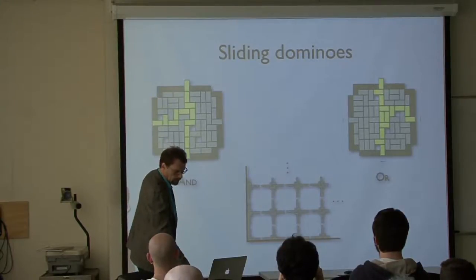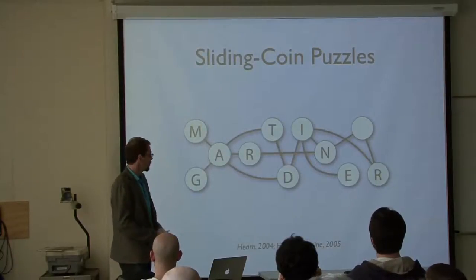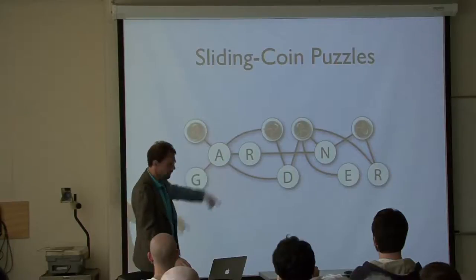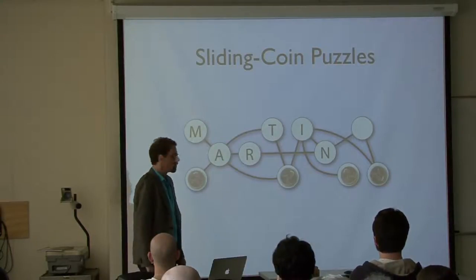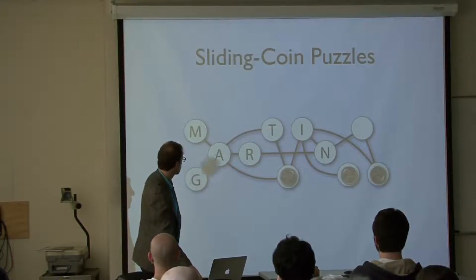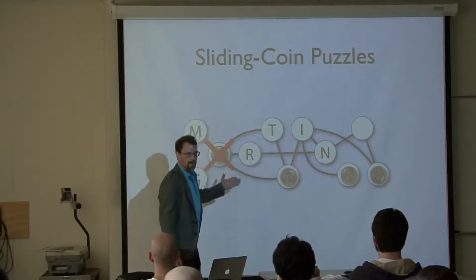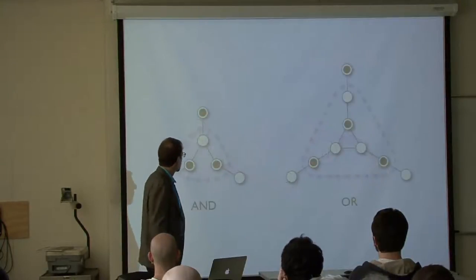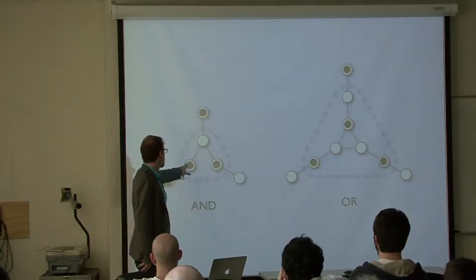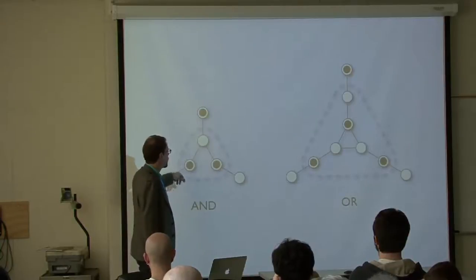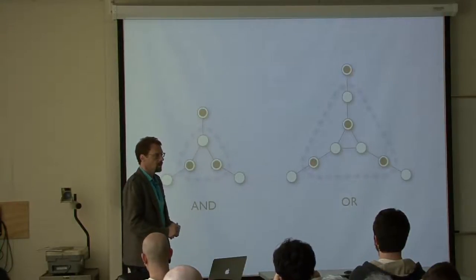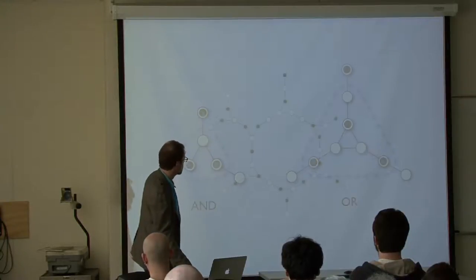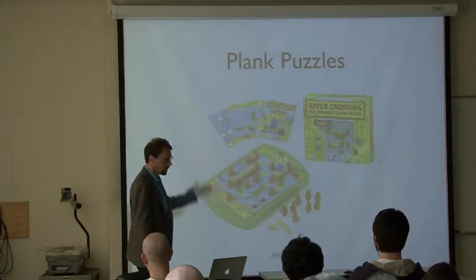The generalized version of the coin-sliding puzzle — given a graph with tokens on vertices that cannot be adjacent, can you slide a token to a given location? — is PSPACE-complete. It's a dynamic version of the independent set problem, which is a known NP-complete problem. The proof that it's PSPACE-complete is essentially one page or less, connecting gadgets together. Plank puzzles, where a character crosses a swamp by walking on planks that can be picked up and placed elsewhere, are also PSPACE-complete.